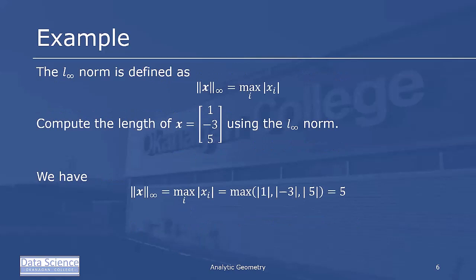Another norm is the L-infinity norm, defined to be the maximum of the absolute value of each component. To compute the length of x = [1, -3, 5] using the infinity norm, we look at the maximum of |1|, |-3|, and |5|. The largest value is 5, so the infinity norm of this vector is 5. We've now seen three different norms, and the length of x is different in each case depending on which norm we use.